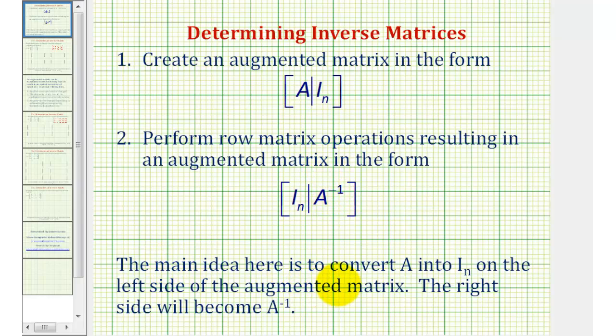The main idea is to convert the given matrix A into an identity matrix using row operations, and then on the right side we end up with the inverse of the original matrix.